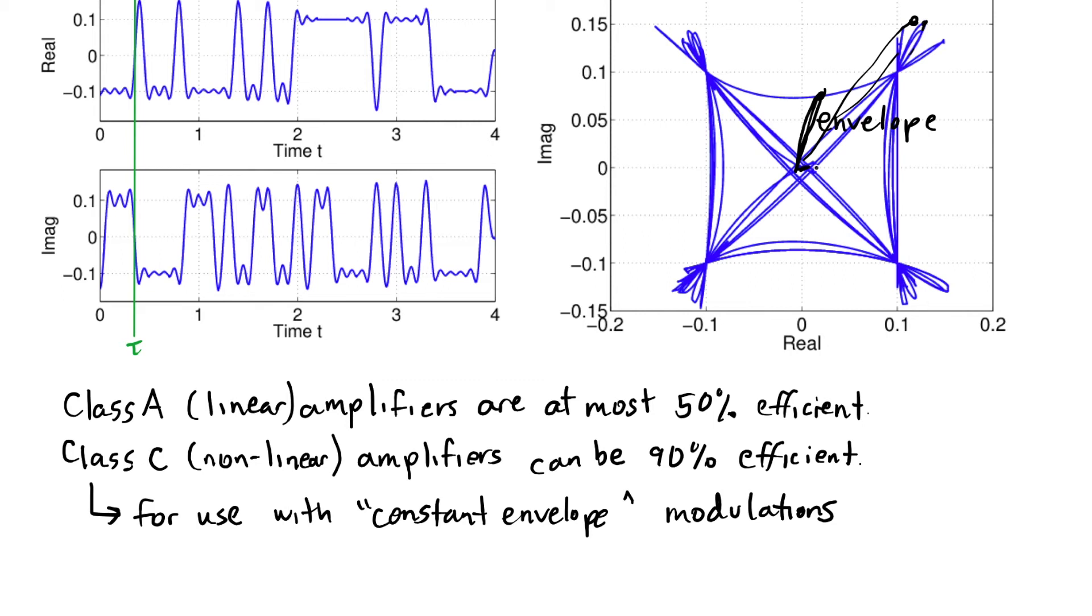So we're not going to be able to use that nonlinear amplifier on this signal that has a wide variety of envelopes that are being sent. We actually want the modulation that is a constant envelope. And here's the thing. QPSK works wonderfully as a constant envelope modulation if we make one modification.